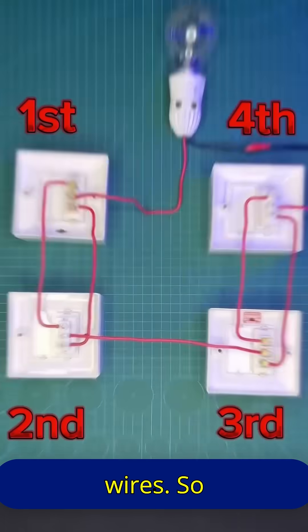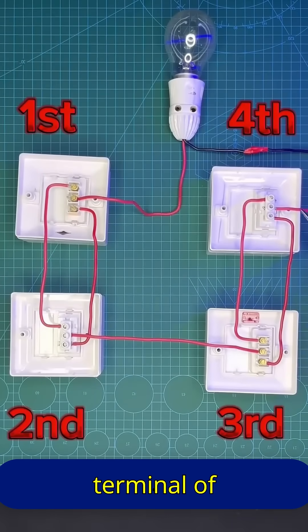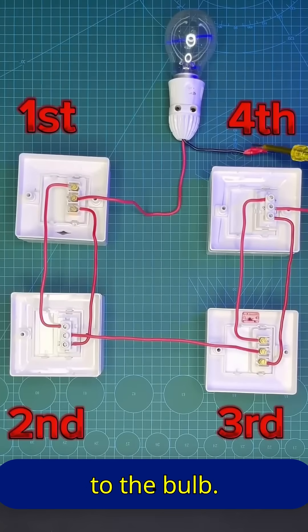After that, here we have the main line's neutral and phase wires. So connect the phase wire to the middle terminal of the fourth switch and connect the neutral wire directly to the bulb.